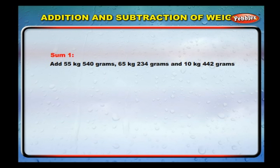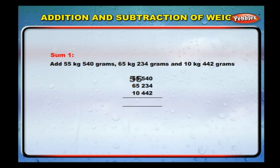Add 55 kilograms 540 grams, 65 kilograms 234 grams, and 10 kilograms 442 grams. Arrange all three weights in columns: 55 kg 540 g + 65 kg 234 g + 10 kg 442 g. We get 131 kilograms and 216 grams.